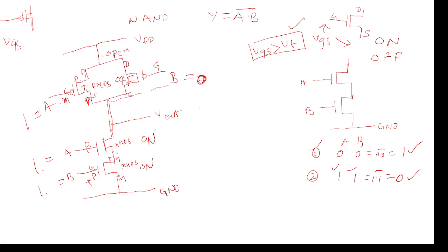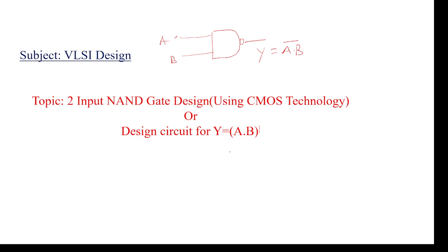So here we are using two NMOS transistors and two PMOS transistors, both complementary to one another. The pull-down network is in series and the pull-up network is in parallel — that is why it is called CMOS technology. Using CMOS technology we have designed a two-input NAND gate: Y = (A·B)̄. Similarly, we can design any number of inputs — for three inputs, we extend the series and parallel connections accordingly.